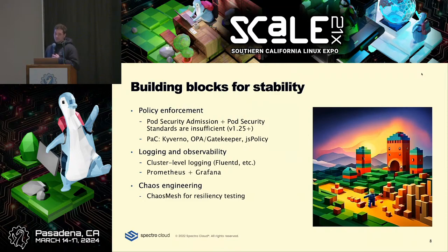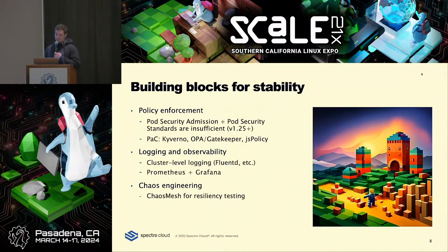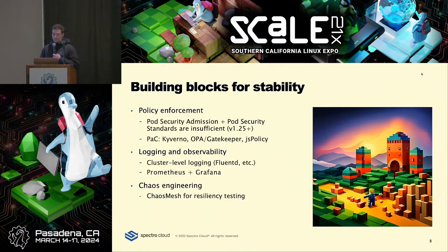If you think you're doing a pretty good job and want to understand whether you can live up to the SLOs you claim to provide, you might want to start playing with chaos engineering. Chaos Mesh is a project in that space that can basically just break things in your cluster — it can simulate node failures, take workloads offline at random, and all sorts of different things. You'd simultaneously monitor uptime for all of your mission-critical services.